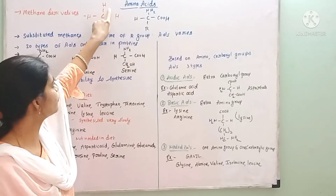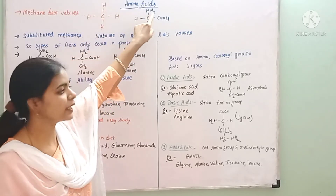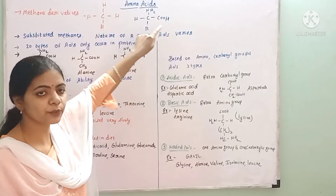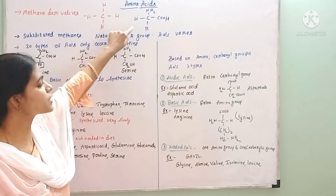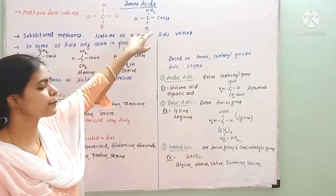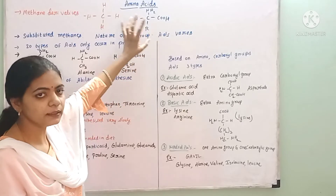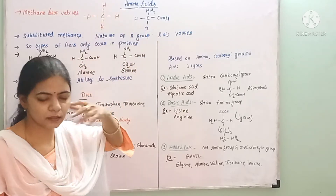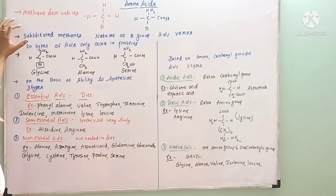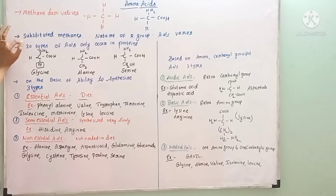The first hydrogen was replaced by an amino group, the second by a carboxyl group, the third remained as hydrogen, and the fourth was replaced by the R group. Like methane, the four valency positions are replaced by four compounds — that is why we call them substituted methanes.